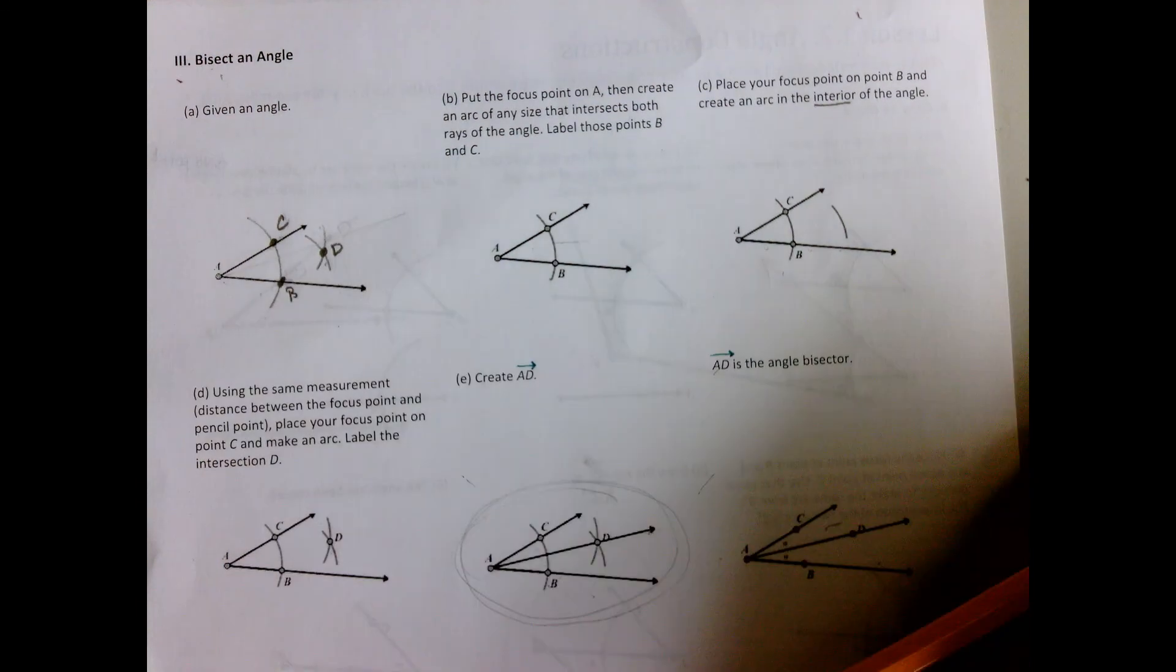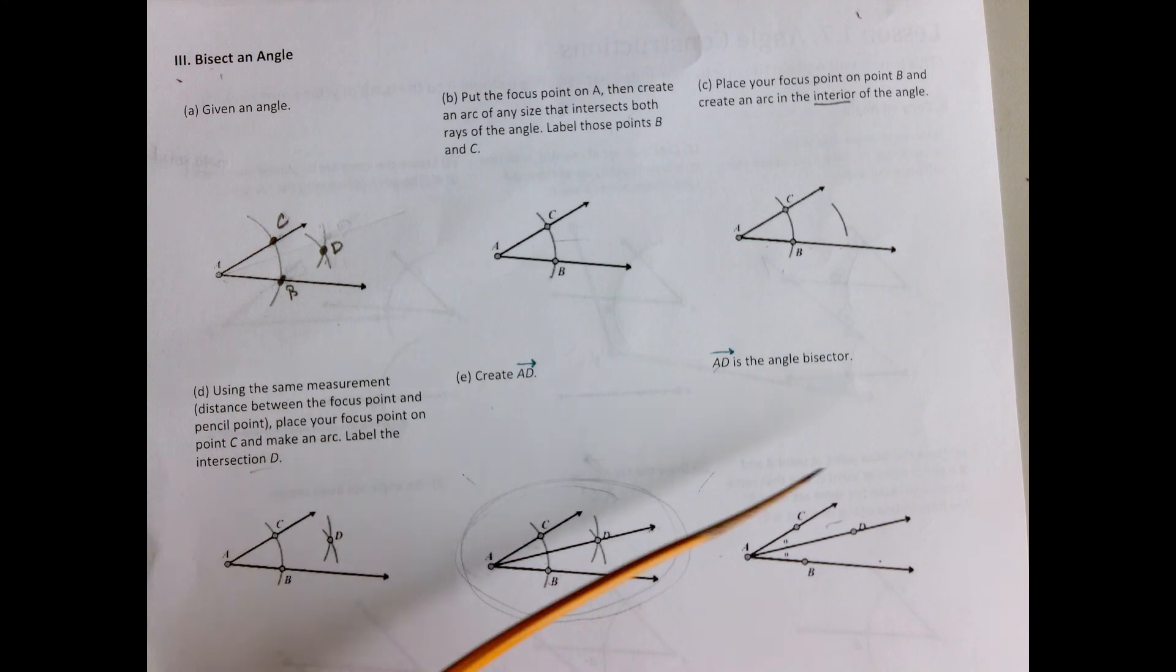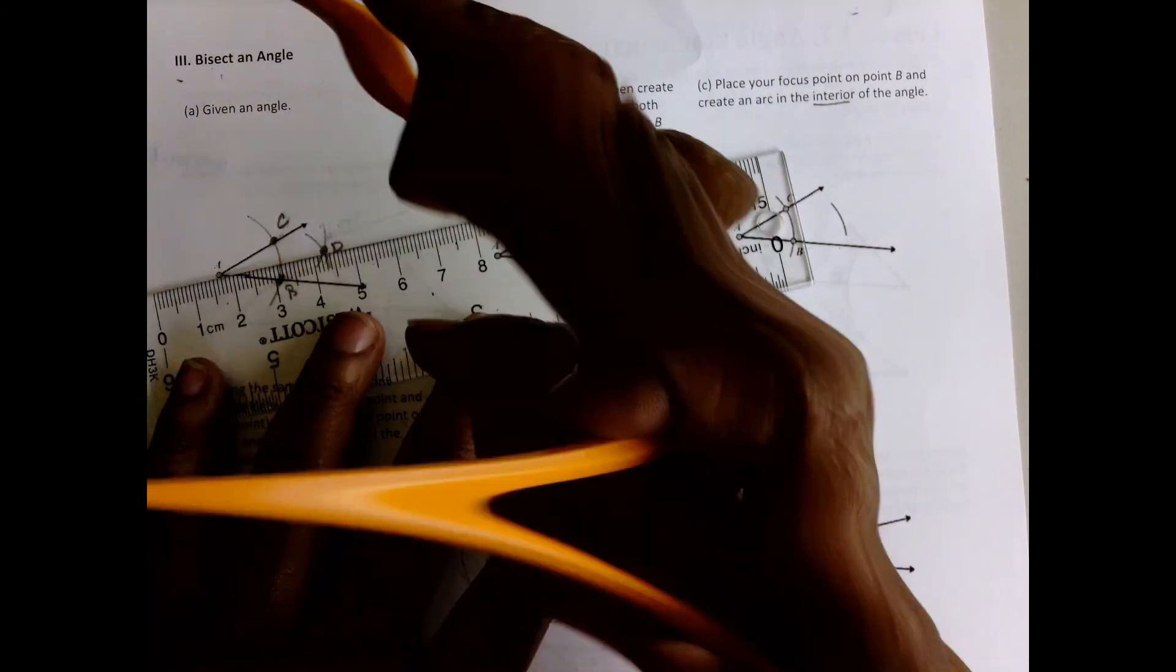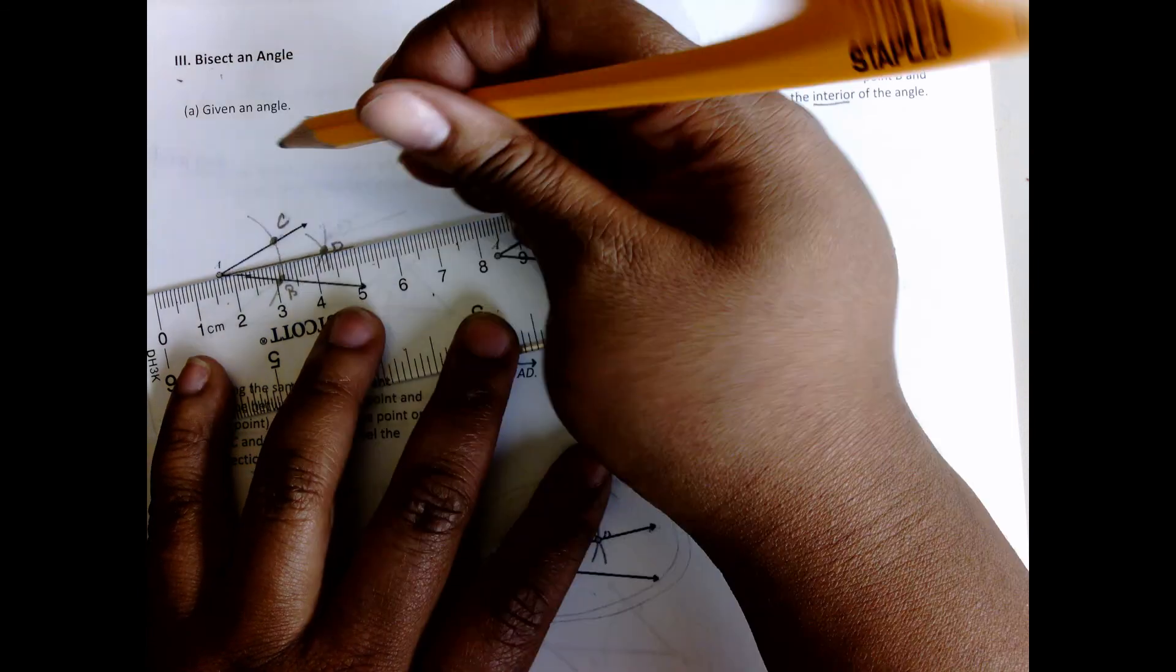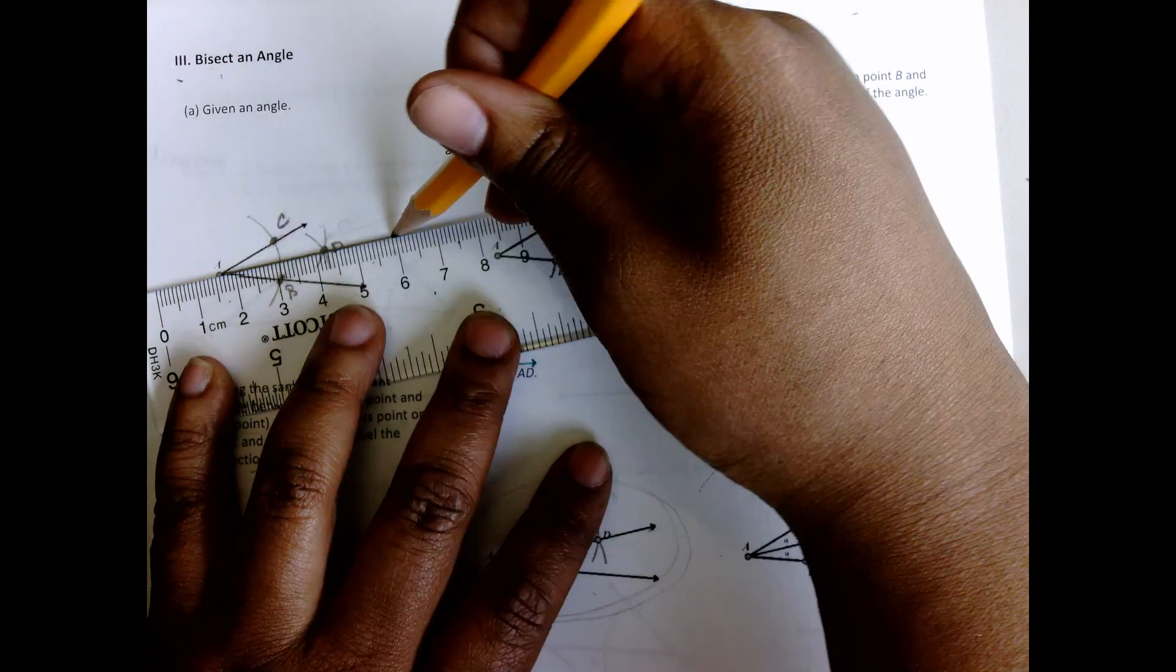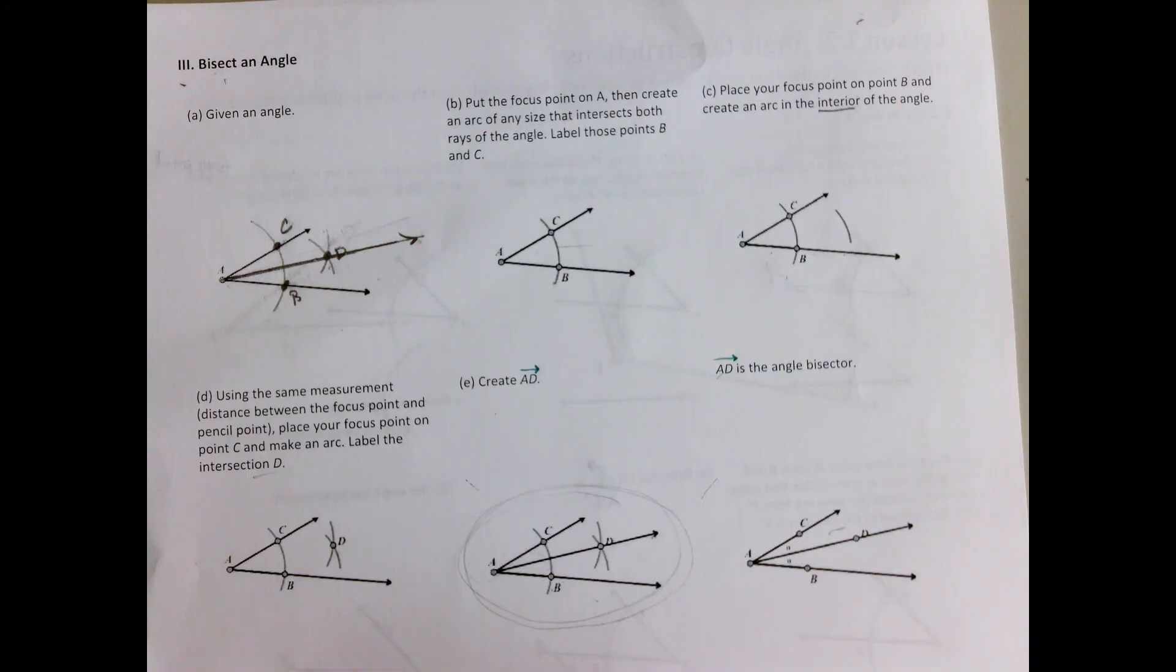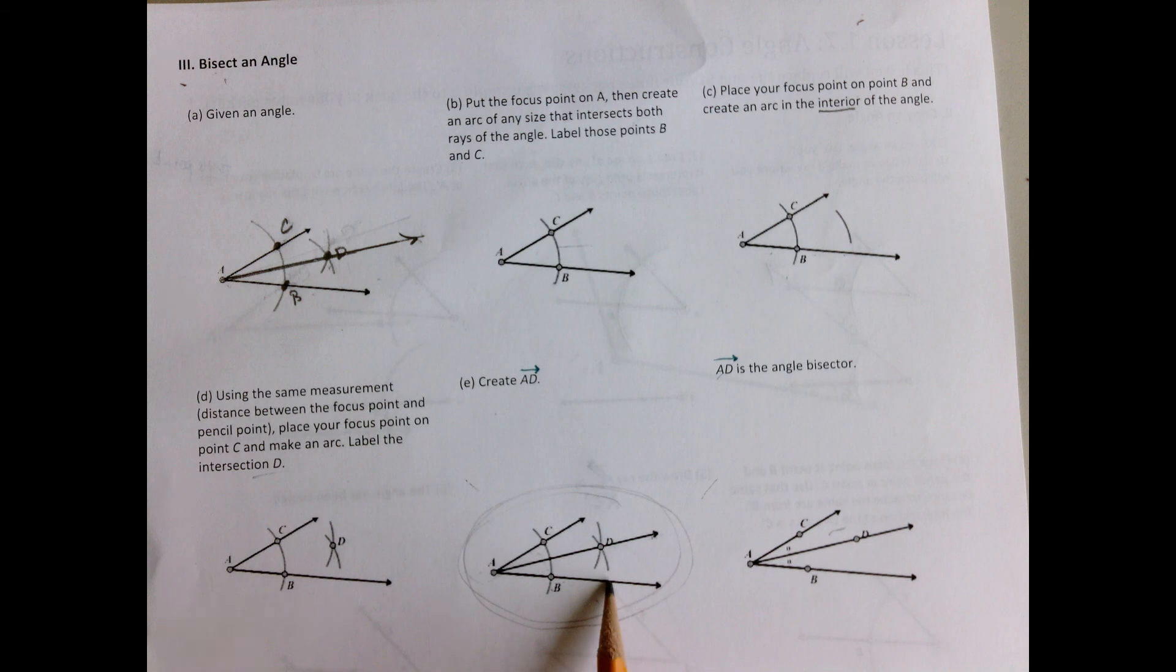All right, once we finish doing that, the last step is to connect using your straight edge. All right, I actually think this is easier than copying an angle. We want to raise that up a little bit more. Bam. Okay, and so we've essentially bisected this angle and so this and this look pretty much exactly alike.